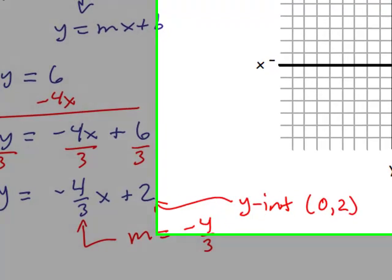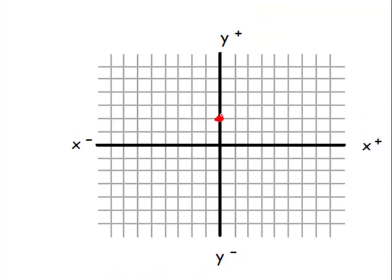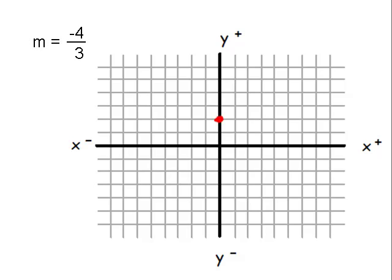So we can plot the point 0, 2, 1, 2, there it is. And we can use the slope, negative 4 thirds.